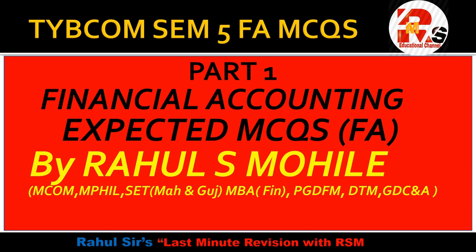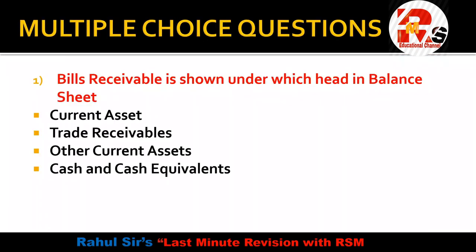Question number 1: Bills receivable is shown under which head in the balance sheet? The options are current assets, trade receivables, other current assets, or cash and cash equivalents. Remember — bills receivable, along with debtors, are both shown under trade receivables in the balance sheet.